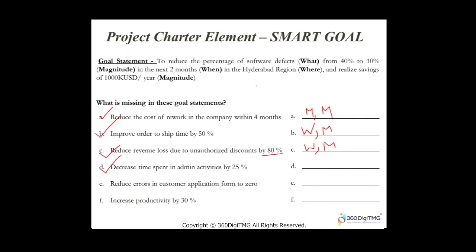'Increase productivity by 30 percent' — it's not specific because it doesn't specify which department or whose productivity. Measurable: 30 percent, yes. Achievable: maybe. Relevant: maybe in context. Time-bound: no, that information is missing. The magnitude of impact is also missing. All these statements have something or other missing, and now you should be clear on what SMART means — Specific, Measurable, Achievable, Relevant, and Time-bound.